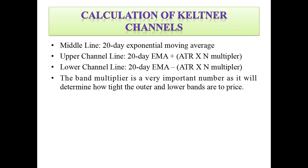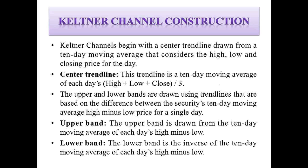For the upper channel line, use the 20-day moving average plus a multiplier; for the lower channel line, minus the same formula. The center trend line is based on a 10-day moving average. The formula uses: (High + Close + Low) divided by 3, then the 10-day moving average is applied. For the bands, use High minus Low for each day, then apply the 10-day moving average of that value.